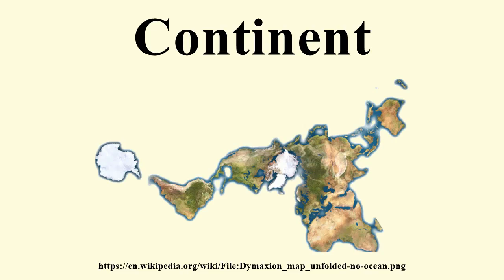If continents are defined strictly as discrete land masses embracing all contiguous land, then Asia, Europe, and Africa form a single continent referred to as Afro-Eurasia. This produces a four-continent model consisting of Afro-Eurasia, America, Antarctica, and Australia. When sea levels were lower during the Pleistocene ice ages, greater areas of continental shelf were exposed as dry land, forming land bridges. At those times, Australia–New Guinea was a single continuous continent, and the Americas and Afro-Eurasia were joined by the Bering Land Bridge. Other islands such as Great Britain were joined to the mainlands of their continents.